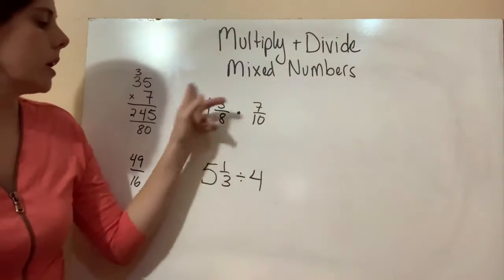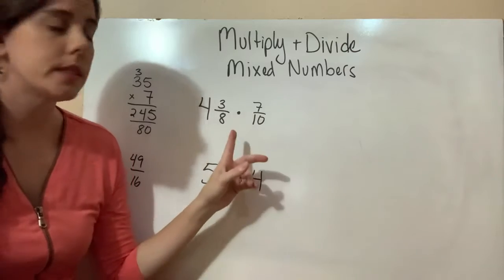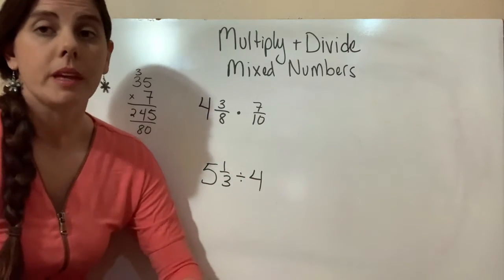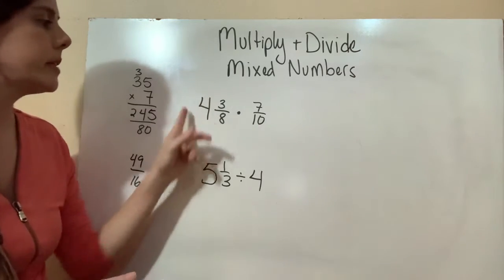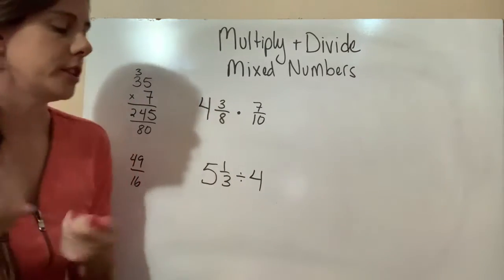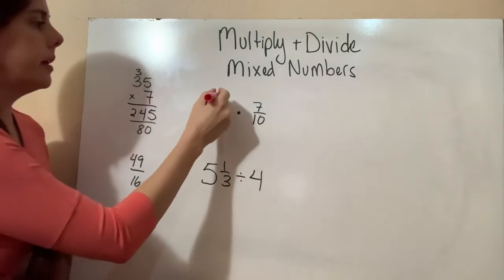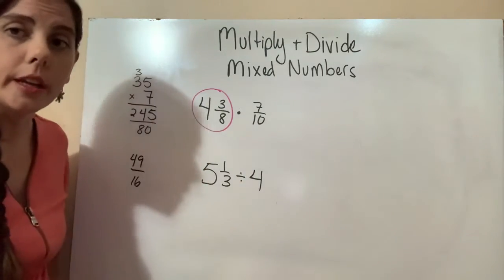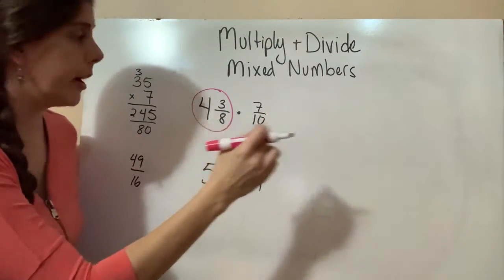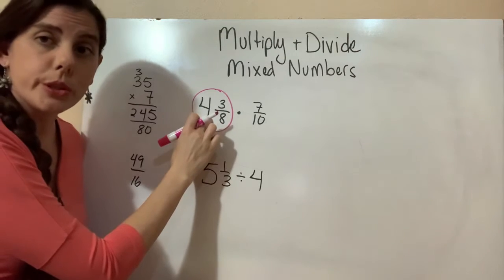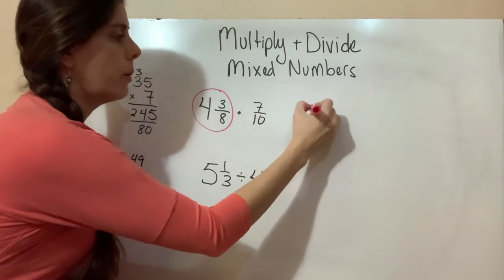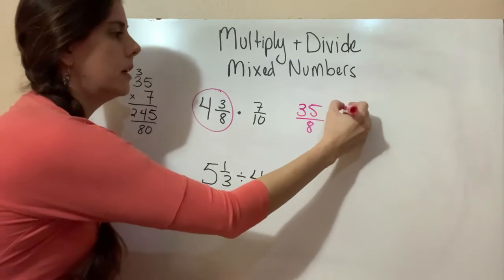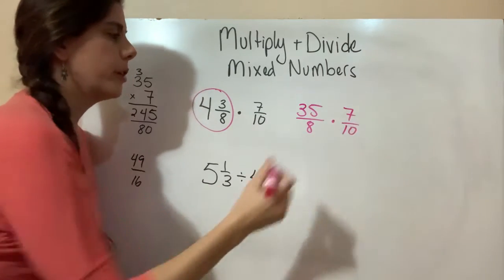Right here, we have 4 3/8 times 7/10. This is multiplication, but we have a mixed number. So what do we need to do? We need to turn this into an improper fraction. Our first step is to take this and turn it from a mixed number to an improper fraction. 8 times 4 is 32, 32 plus 3 is 35. So now we have 35/8 times 7/10.